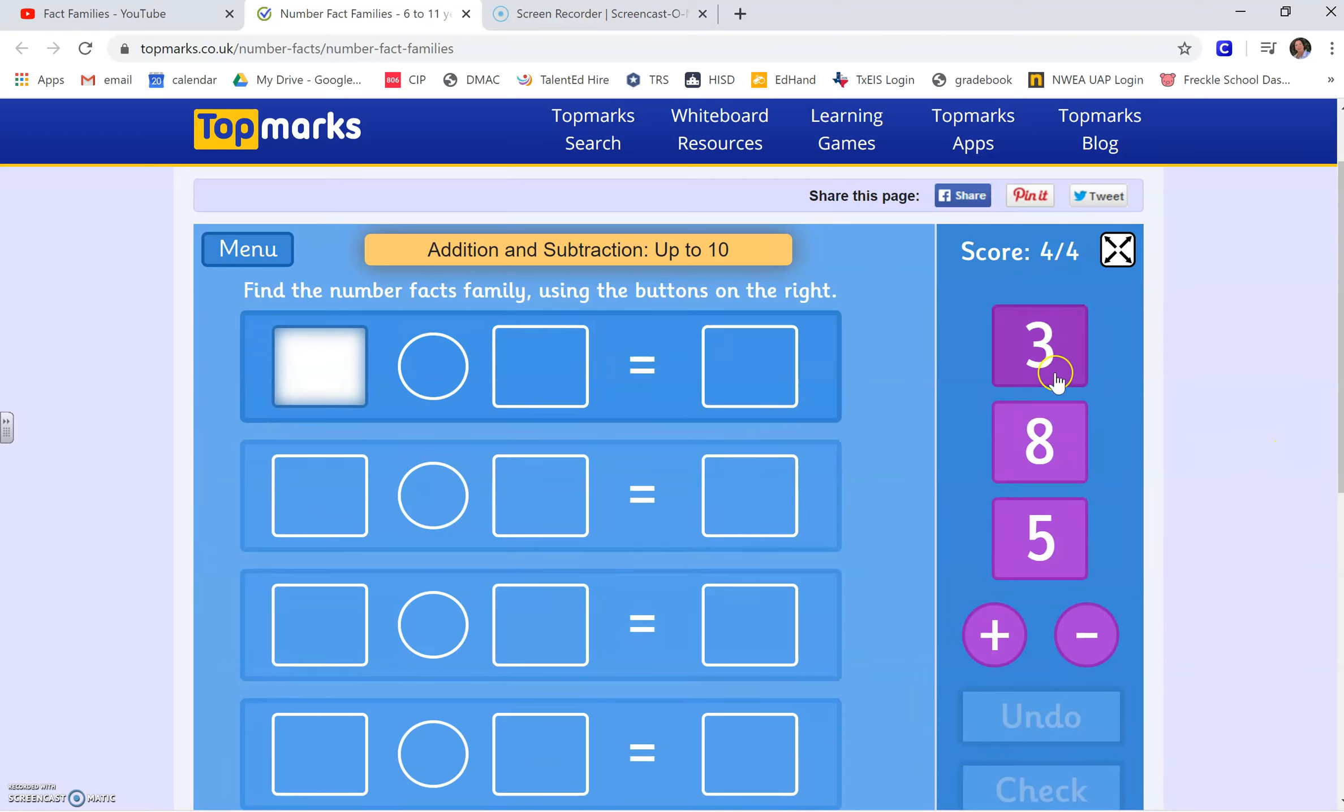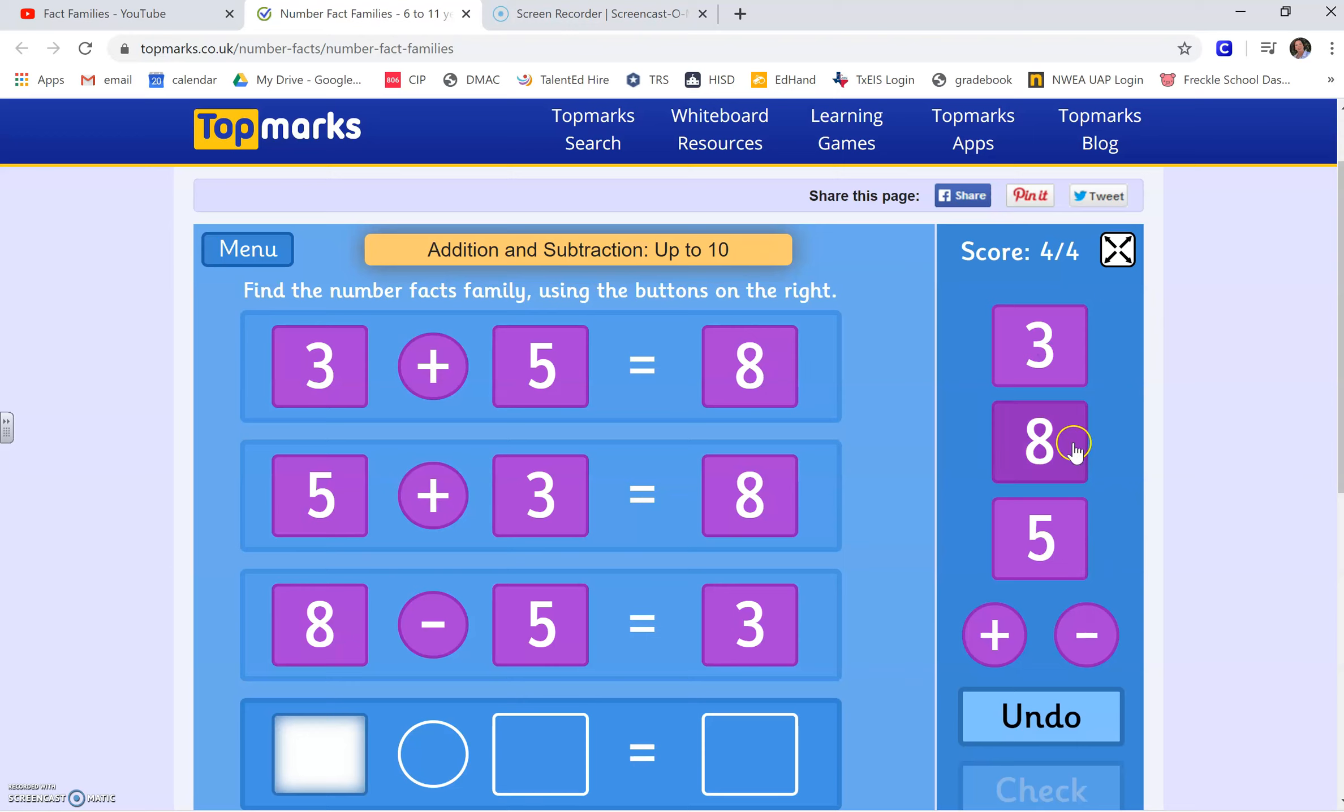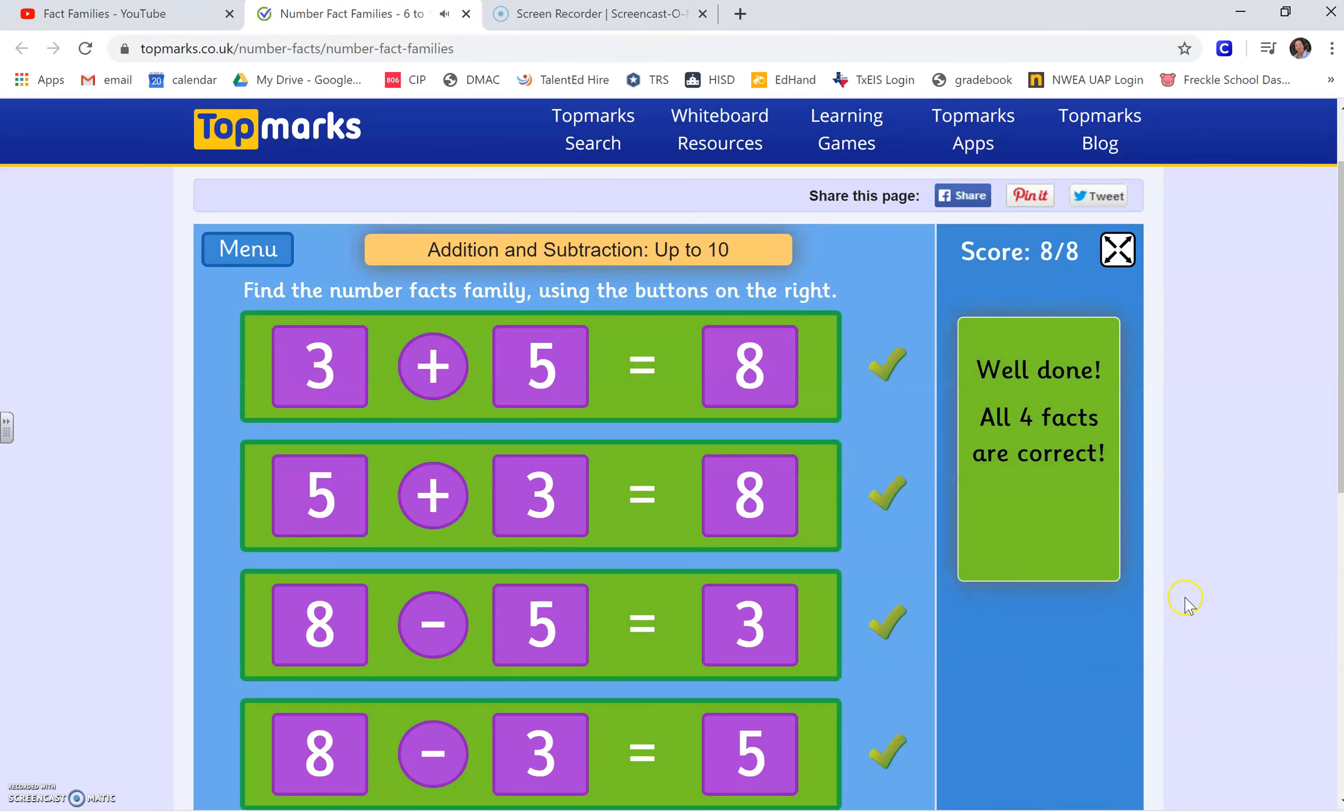Ooh, let's do this next one. Three plus five equals eight. Five plus three equals eight. Eight minus five equals three. Eight minus three equals five. Let's check to see how Mrs. Henschen did. I did it right again.